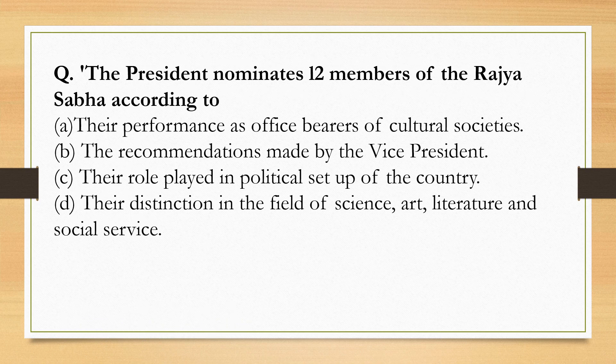The President nominates 12 members of the Rajya Sabha. The nomination is not based on their performance as office bearers of cultural societies, recommendations made by the Vice President, or their role in the political setup. It is based on their distinction in the field of Science, Art, Literature, and Social Service. So the correct option is Option D.